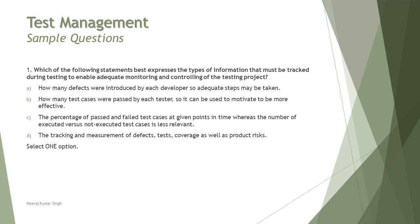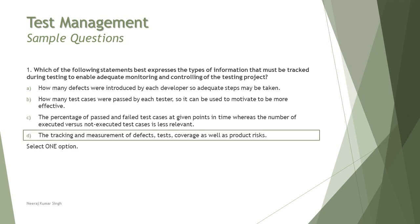That's not a good practice. Option C is about the percentage of passed and failed test cases at given points in time, whereas the number of executed versus not executed test cases is less relevant — that's another thing not relevant from a monitoring point of view. But option D does cover the primary dimensions of monitoring: tracking and measurement of defects, test coverage, product risk, and confidence. These are the four primary dimensions, so the right answer is D.